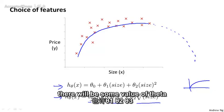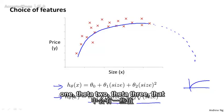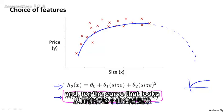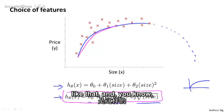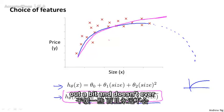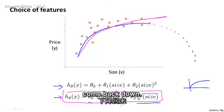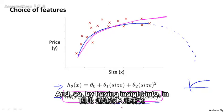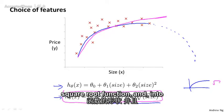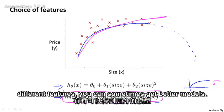And maybe there will be some value of theta one, theta two, theta three that will let you take this model, and for the curve that looks like that, and goes up but doesn't, but sort of fattens out a bit and doesn't ever come back down. And so by having insight into, in this case, the shape of the square root function, and into the shape of the data by choosing different features, you can sometimes get better models.